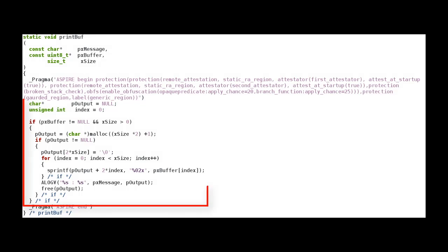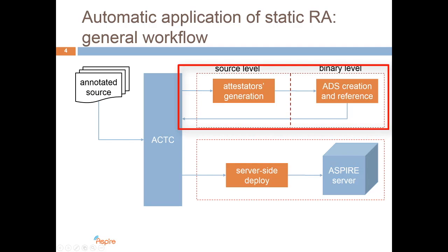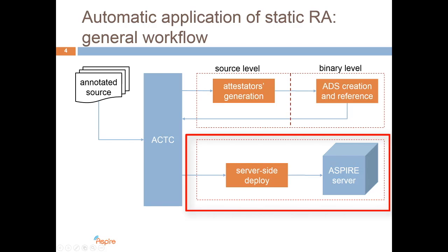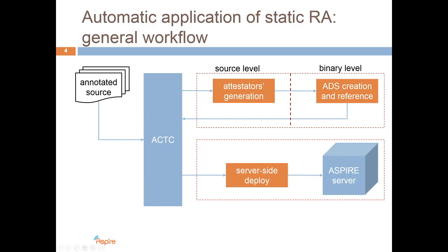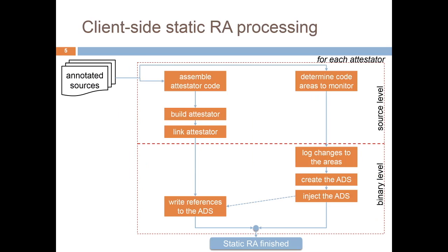The automatic application of the static remote attestation performs two separate tasks. On the client, it builds the attestators and creates and leaks the attestation data structures for each attestator. Then it generates and starts the server-side components — that is, the attestation manager, the dispatcher, and initially one verifier — and initializes and populates the ASPIRE database. Moreover, it generates the extractor, which pre-computes attestation responses based on the client-side attestation data structure to speed up the verification.